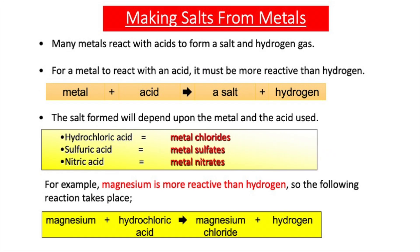Salts can be made from the reaction of acids and bases or acids and alkalis. The next way to make a salt is from an acid reacting with a metal — many metals react with acids to form a salt and hydrogen gas. For a metal to react with an acid it must be more reactive than hydrogen. We've discussed the reactivity series previously — it is a list of metals in order of reactivity, and for comparison includes hydrogen and carbon as non-metals.